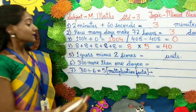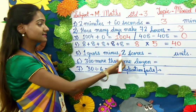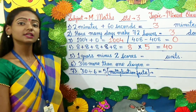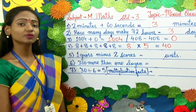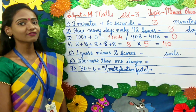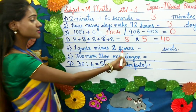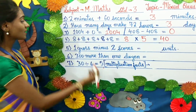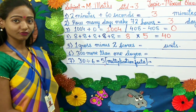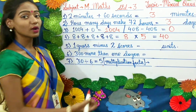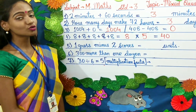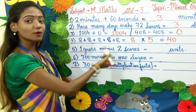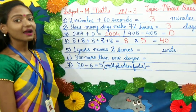The fifth question: 1 gross minus 2 scores. To solve this, you need to understand these units. 1 gross equals 144 units, and 1 score equals 20 units. So 2 scores equal 40. Therefore, 144 minus 40 gives us the answer 104.